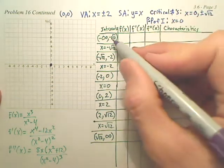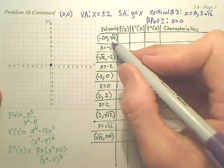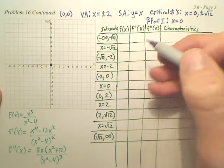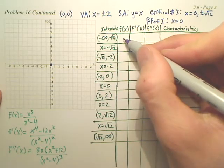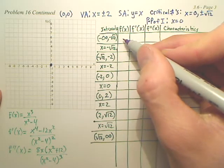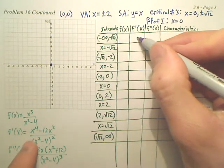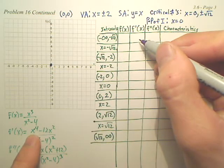For the interval, what's an easy value between negative infinity and negative square root 12? Negative 4. Would negative 4 be a good one? Yeah. Now, I'm just going to put, do I need to actually find the value at that? No. So, I'm going to be plugging in negative 4. When I plug in negative 4 to the first derivative, look at this. What's a negative 4 to the fourth?